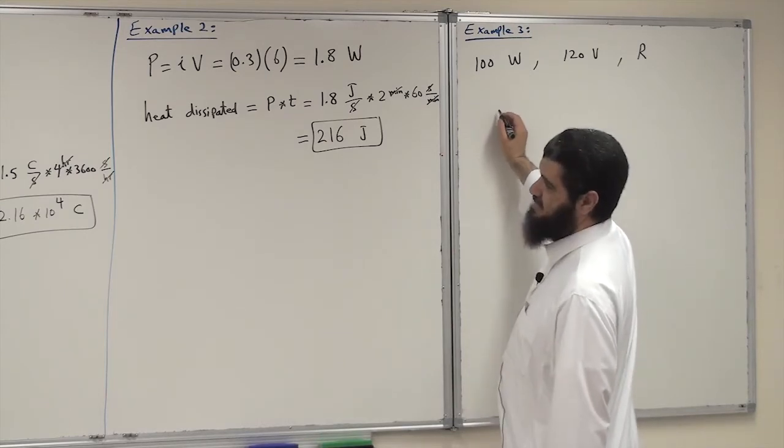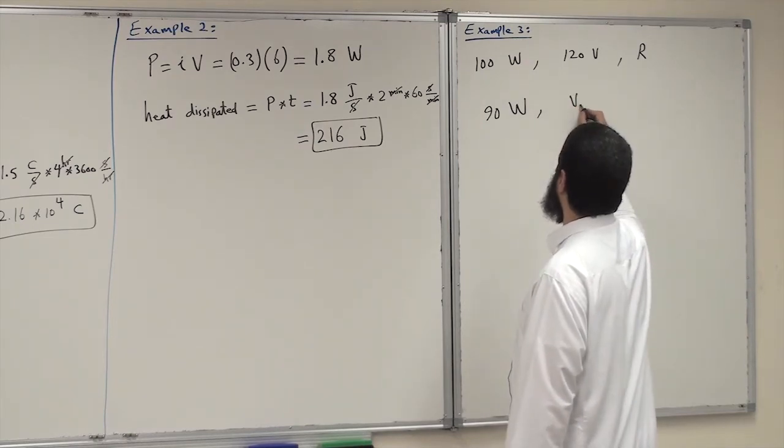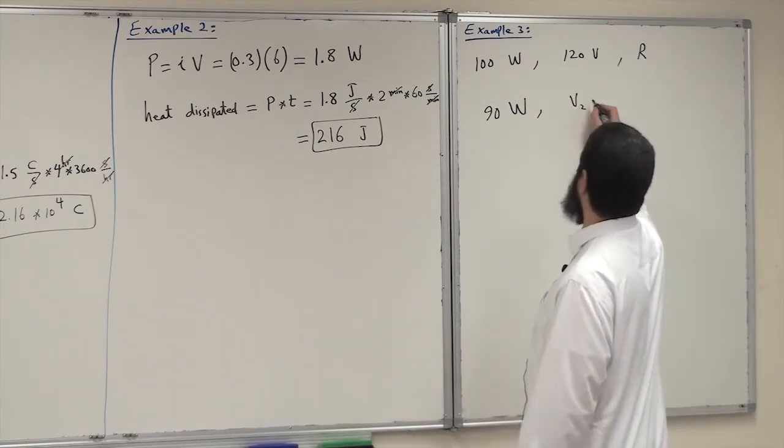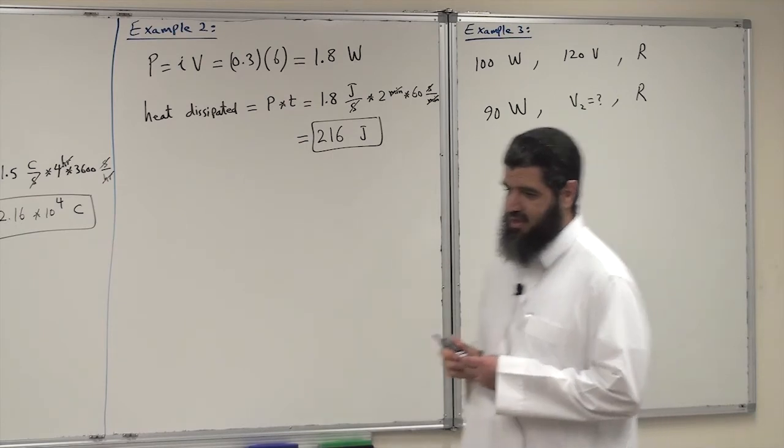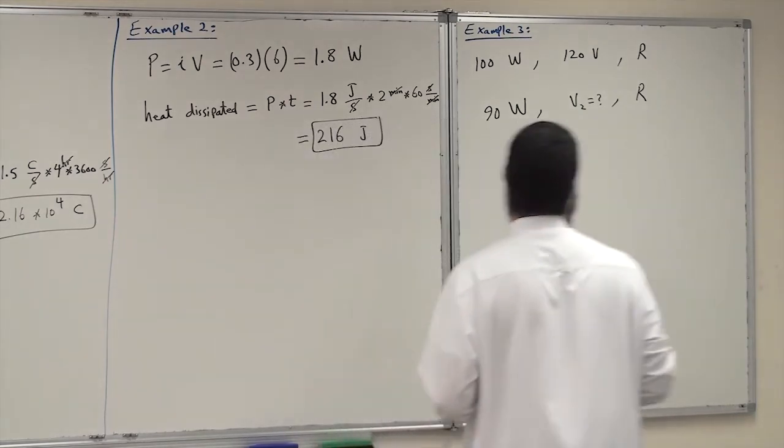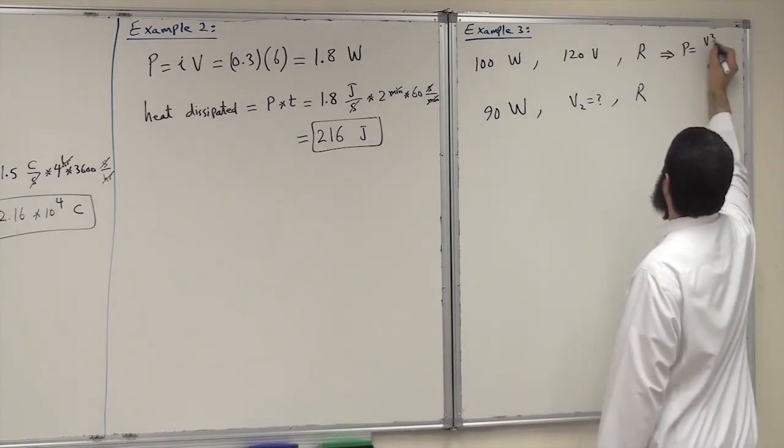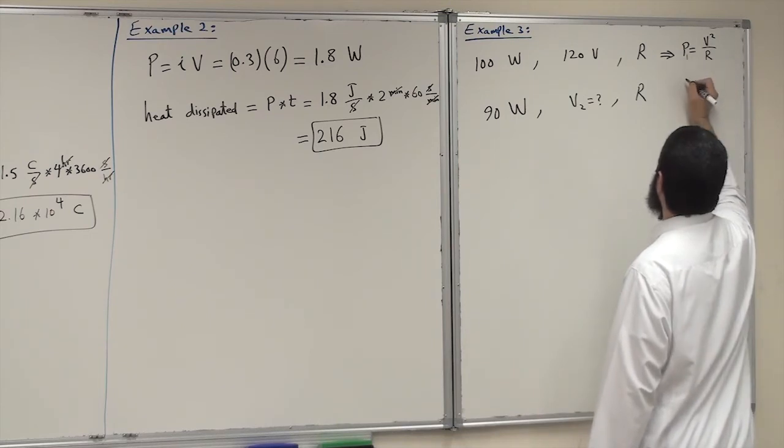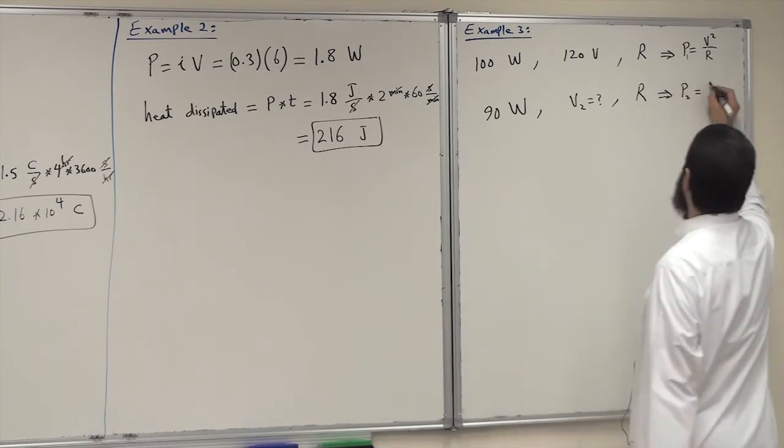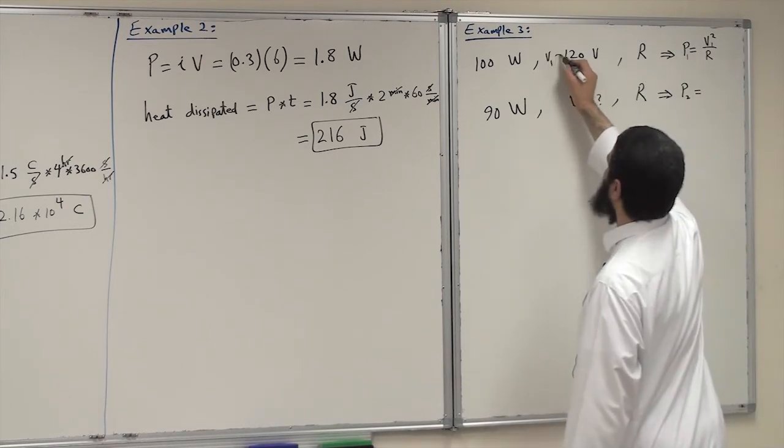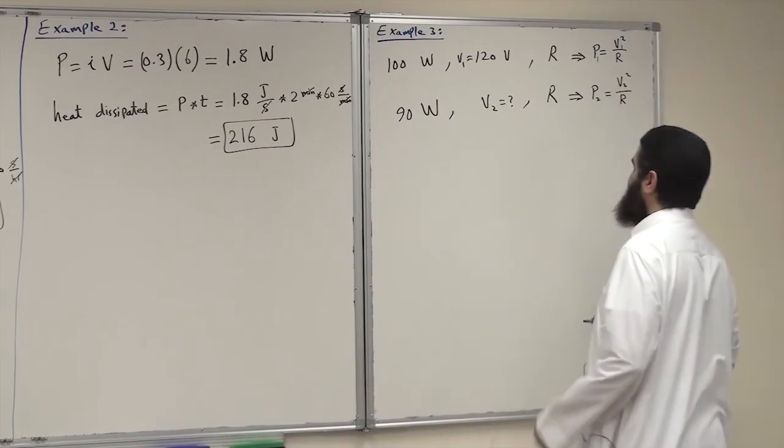In the second case, it is using only 90 watts. This voltage V2, we don't know. We would like to know how much is this voltage where R is constant. Now we can use the other definition of power. We know that power equals V squared over R. So this is power number one. In the second case, we have 90 watts power. This is V1, where V1 is 120 volts, and this is V2 squared divided by the same R.